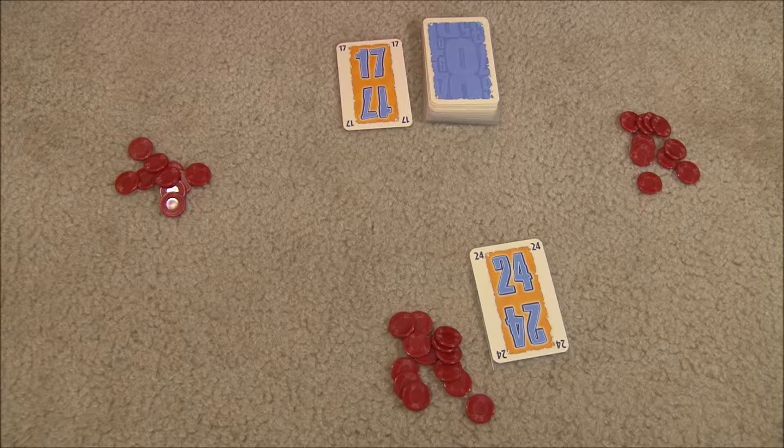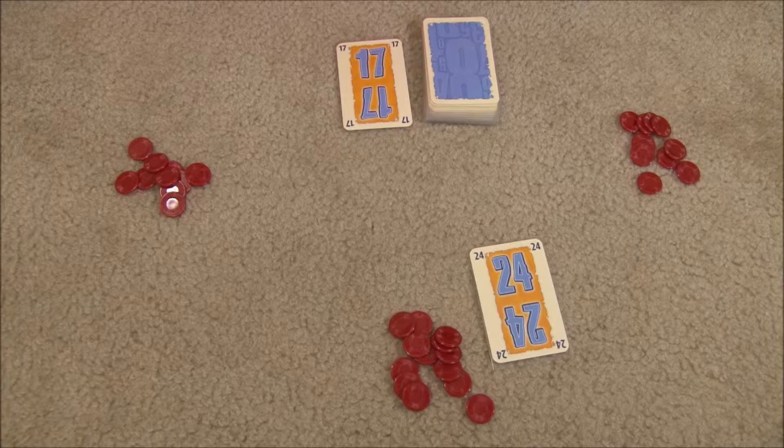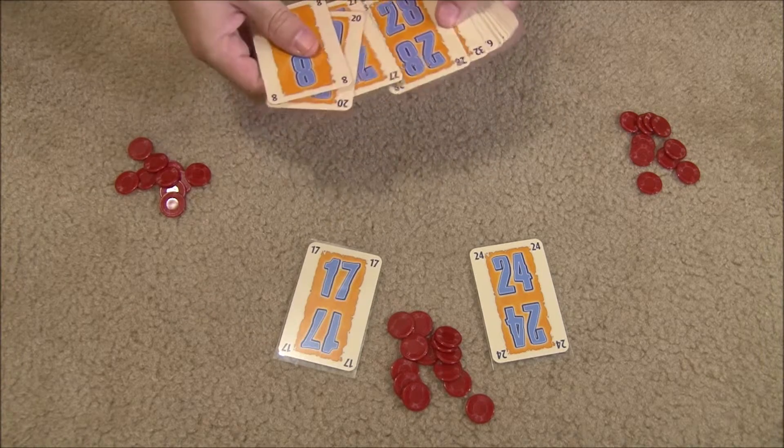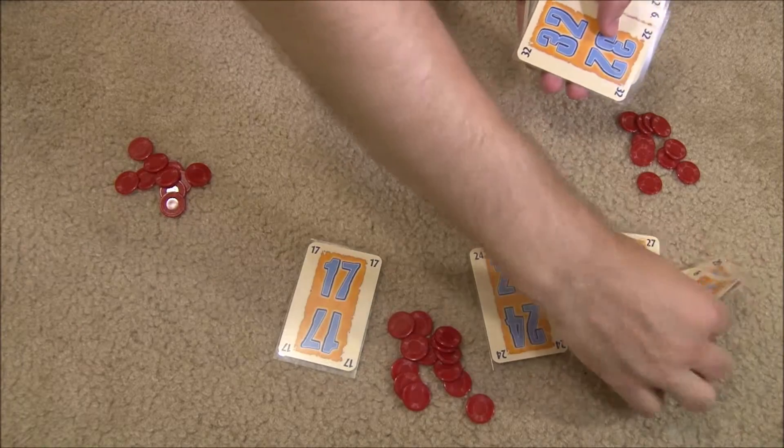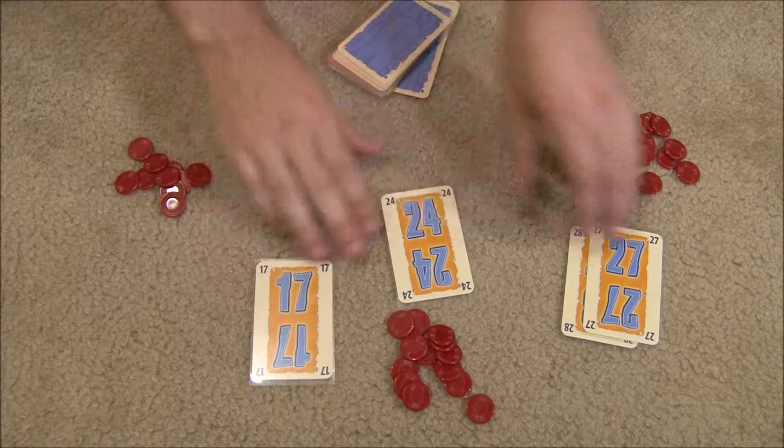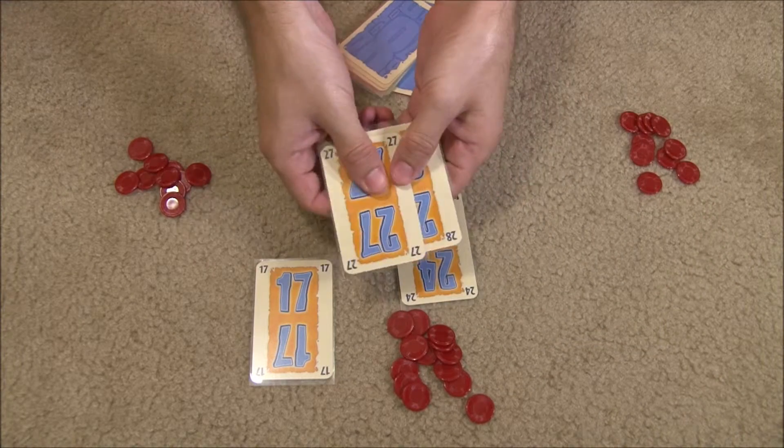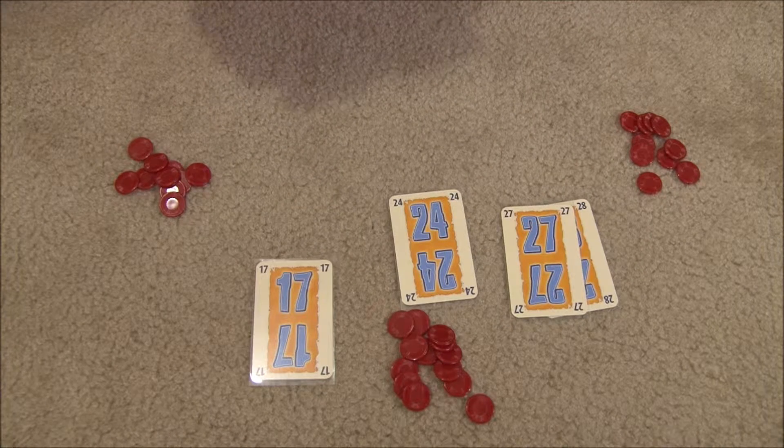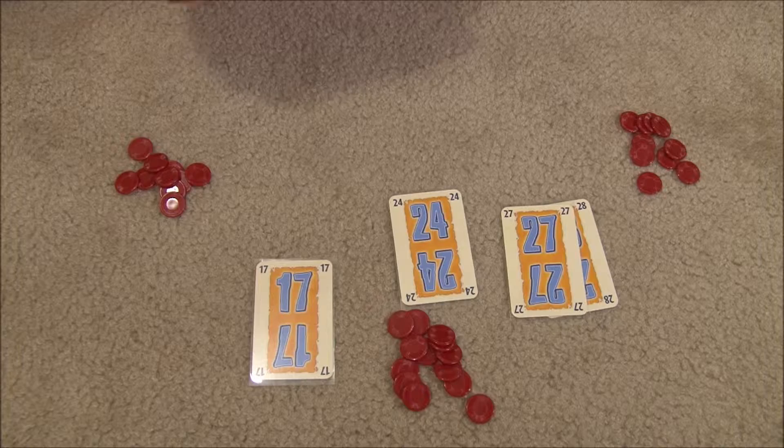At this point, the game ends, and scores are calculated by adding up the value of all single cards and the lowest in unbroken sequences. So for example, if this guy had these cards in front of him, it would actually be 17 plus 24 plus 27, because 27 and 28 are consecutive numbers. So he only adds the value of the lowest number in that set.